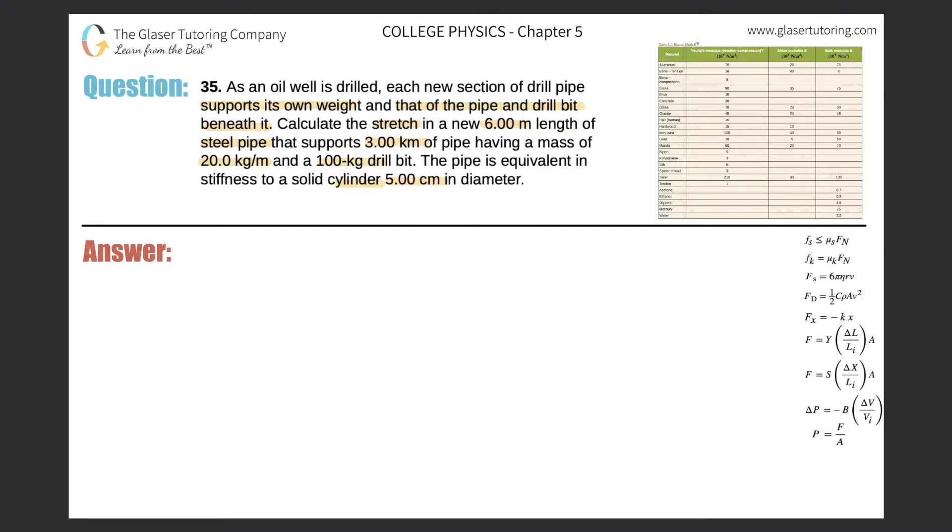First thing is we're trying to find the stretch on an object and we're talking about compression tension, so what formula are we going to start with? We're going to start with Young's formula, the Young's modulus formula. The force of tension or compression is equal to Young's modulus times the change in length divided by the initial length of the object in question that we're trying to find the compression or stretch of, multiplied by the cross-sectional area of that object itself.